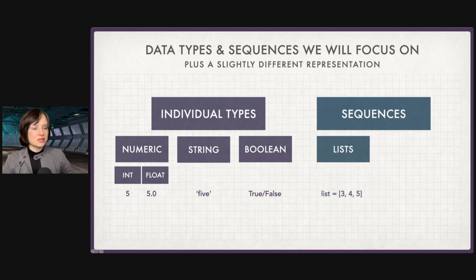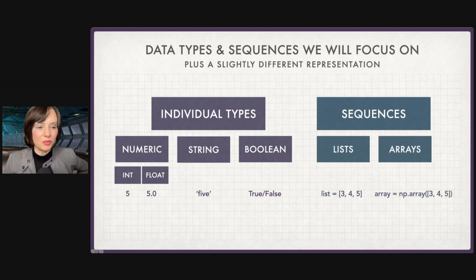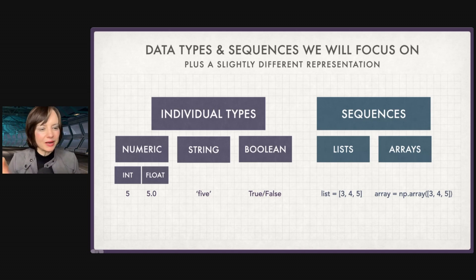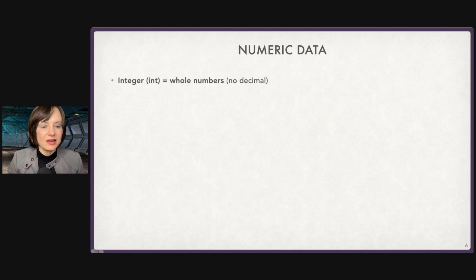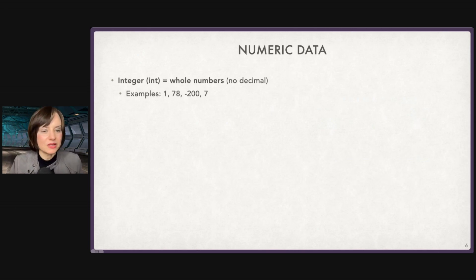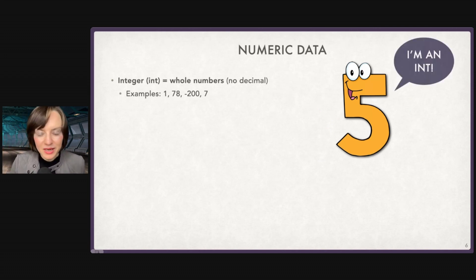Within sequences, we're going to work with lists and arrays. Arrays are not built in, but we'll use them so much that I want to talk about them in context with lists. Numeric data: ints are whole numbers — so no decimal — 1, 78, minus 200, seven. Floats are real numbers; they can be whole or fractional, meaning we're going to see a decimal: 1.0, 3.14, 4.6 repeating, minus 2.0.